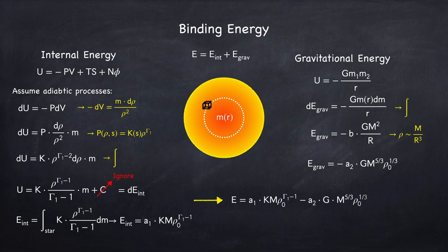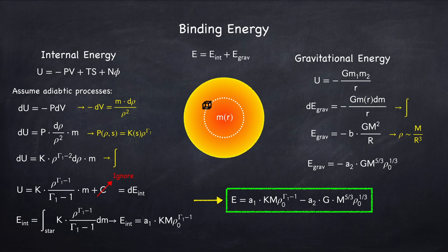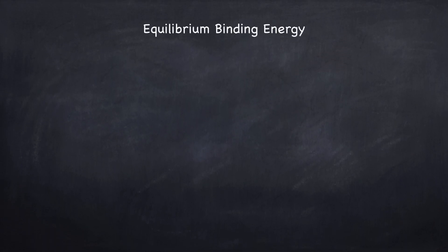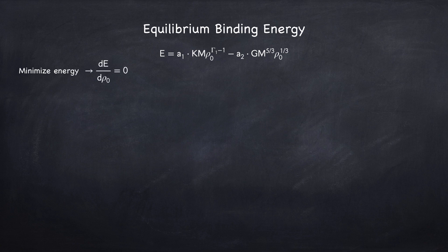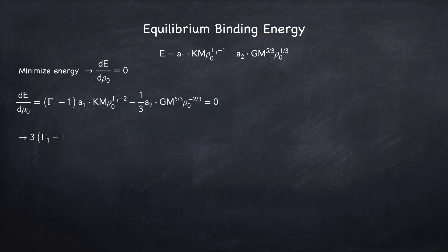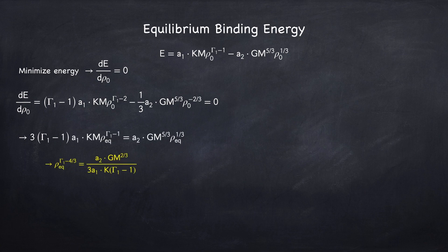So for a given mass and a given central density, we now know the total binding energy of a star. The mass is fixed by the size of the cloud that collapsed into a star. We now have to find what the central density is for a given mass, and in order to do that we're going to minimize the energy. Now let's find the equilibrium binding energy. We know the form of the total energy, and the only thing that can vary is the central density. To find the equilibrium energy we minimize with respect to the density — taking a derivative and setting it to zero. Since these two terms must add up to zero at equilibrium, they must be equal to one another when the density is the equilibrium density. This gives us an expression for the equilibrium density in terms of the mass of the star, and so we've now found the equilibrium energy.